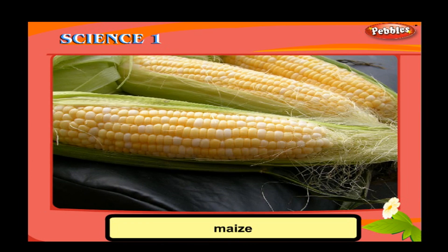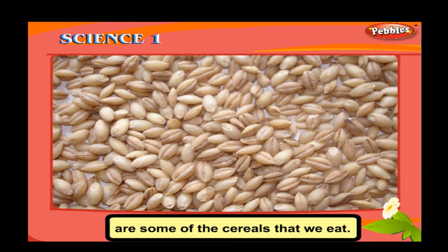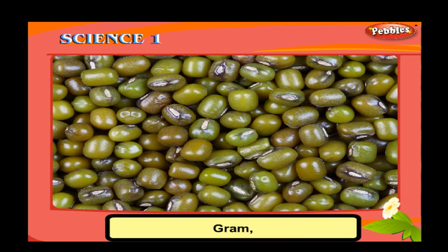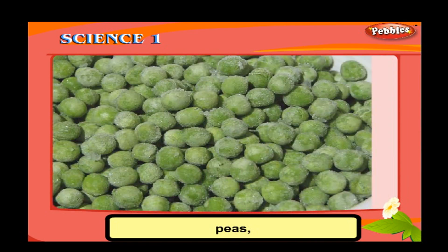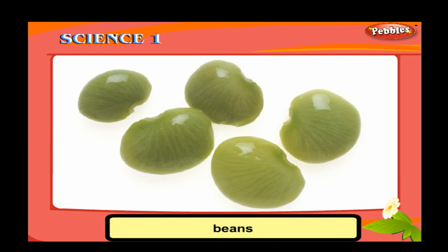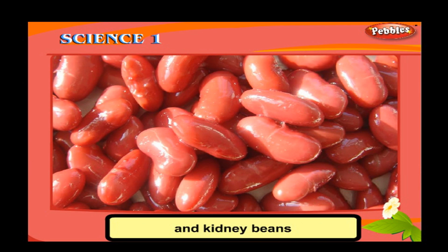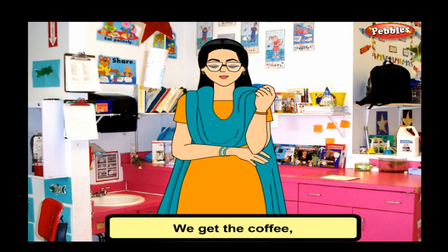Wheat, maize, and barley are some of the cereals that we eat. Gram, peas, beans, and kidney beans are some of the pulses that we eat. We also get coffee and tea and sugar from plants.